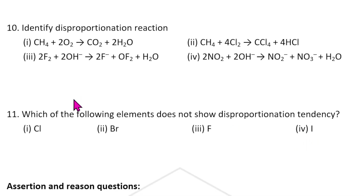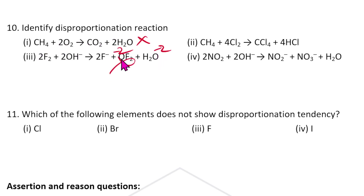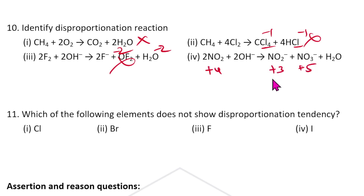Disproportionation means the same element undergoes both oxidation and reduction. Looking at the options involving carbon — there is no difference, so that is not it. For the option with CCl₄: carbon goes from +4 to +3 (reduction) and +4 to +5 (oxidation) — that is disproportionation. So the answer for this question is the fourth option.